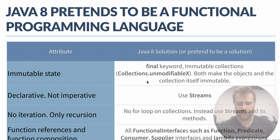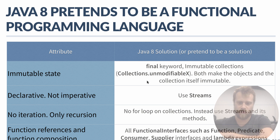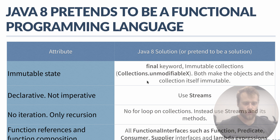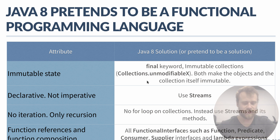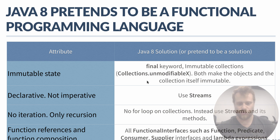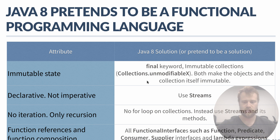The other thing is function references and function composition. You may refer to a function with functional interfaces — a functional interface reference may refer directly to a function. You have other interfaces to define functions: Function, Predicate, Consumer, and Supplier. We will talk about them in the next videos. We also have lambda expressions, which are syntactic sugar to define these types of interfaces.